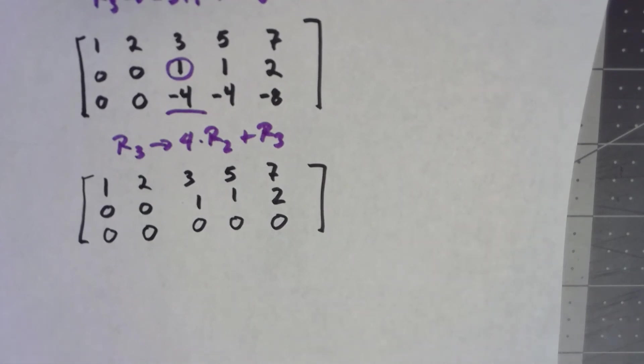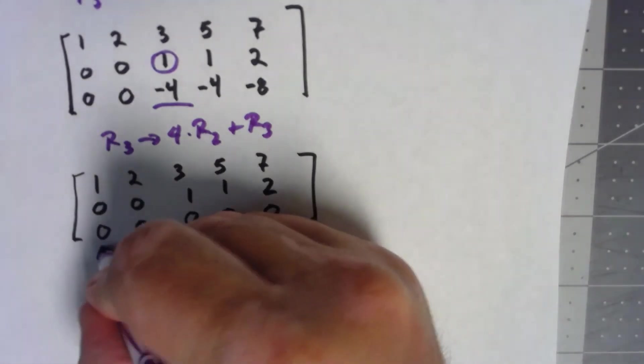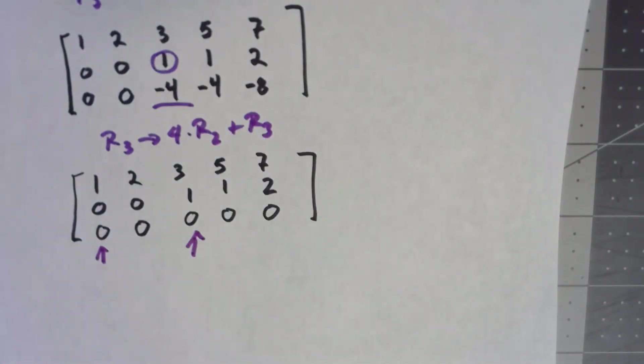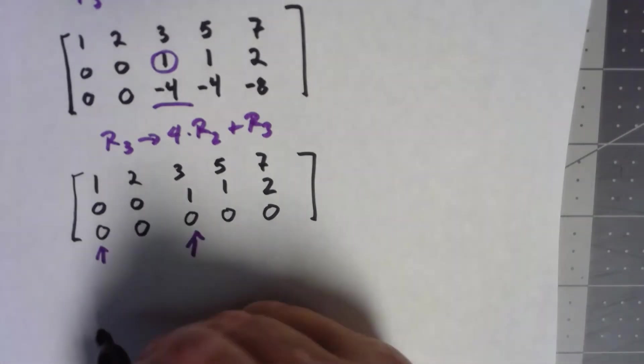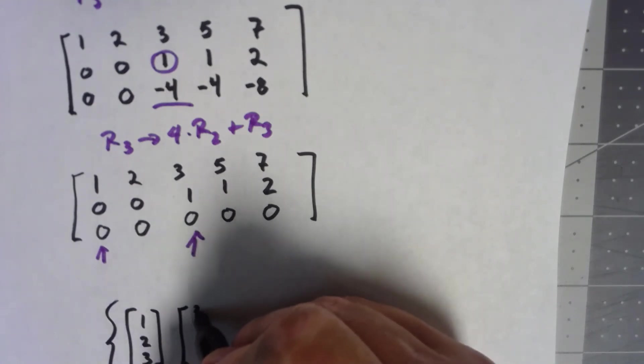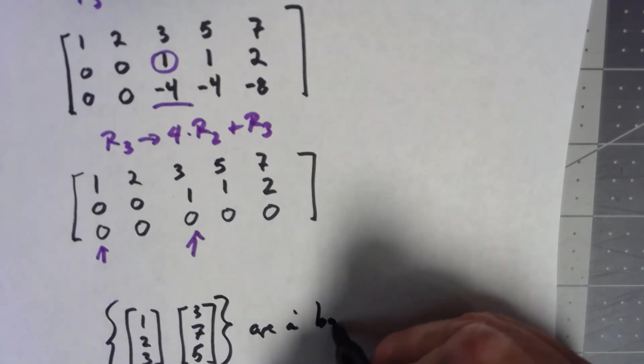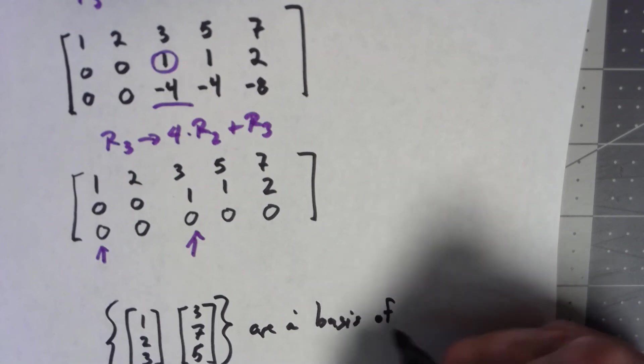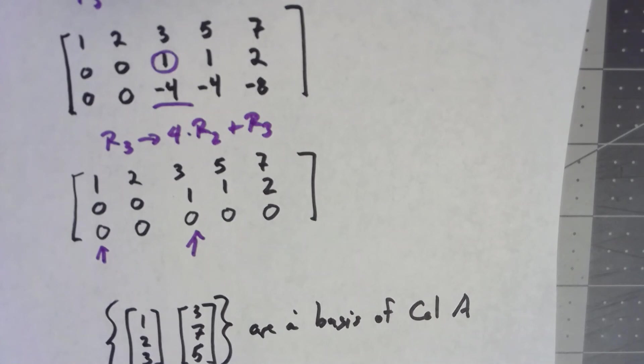So the columns that had pivots were there and there. If I go back to the original matrix and take those columns, that means the set {(1, 2, 3), (3, 7, 5)} are a basis for the column space of the matrix, the original matrix. So if we call that A.